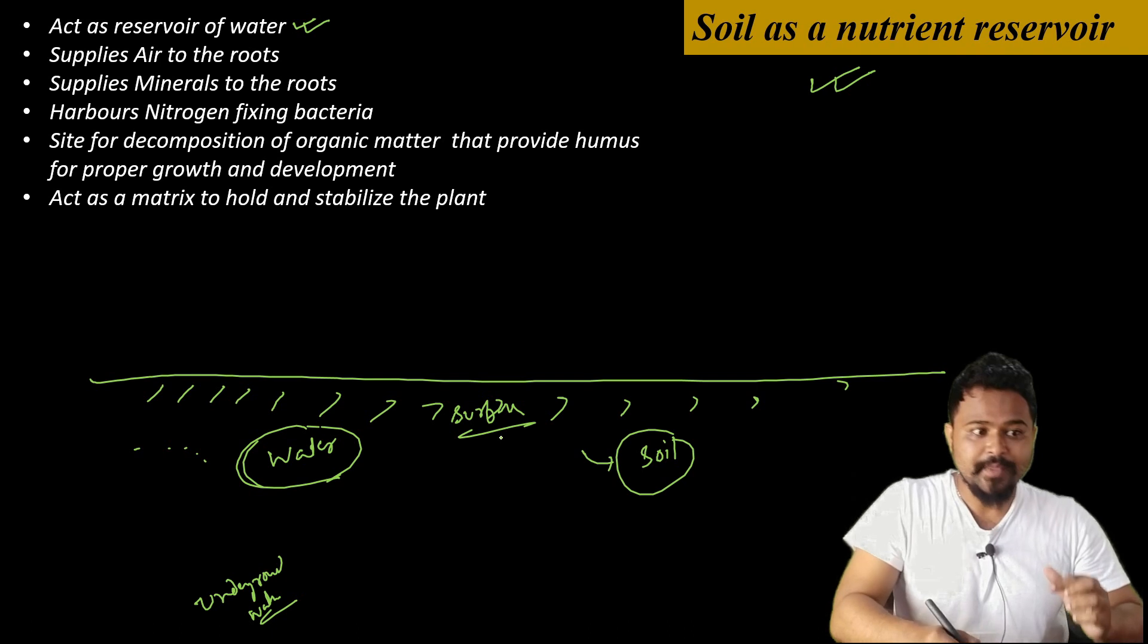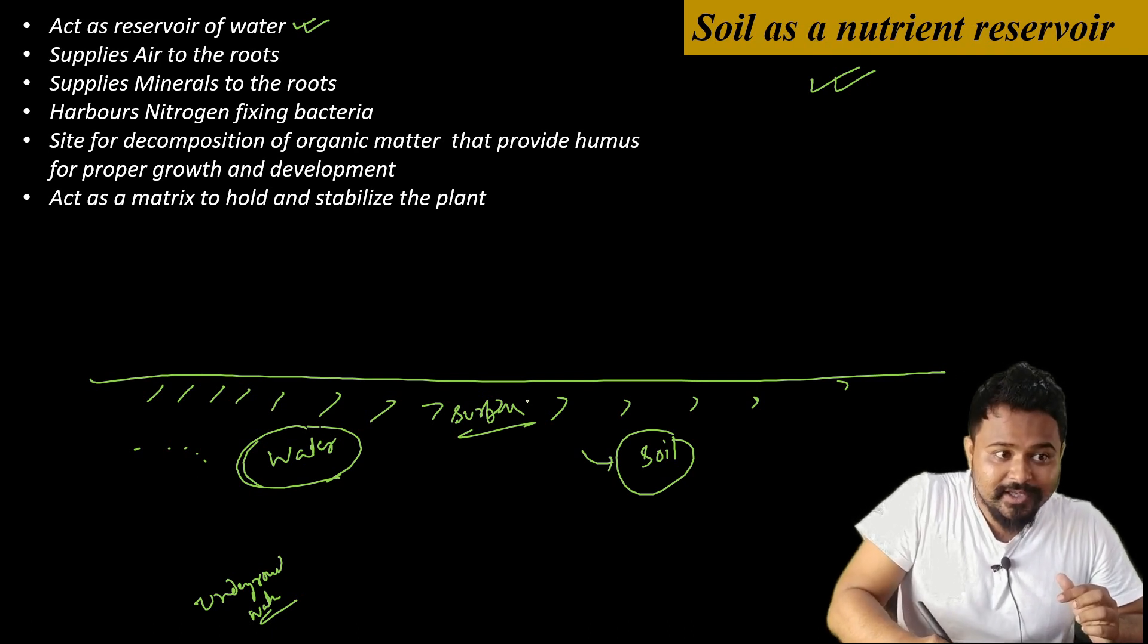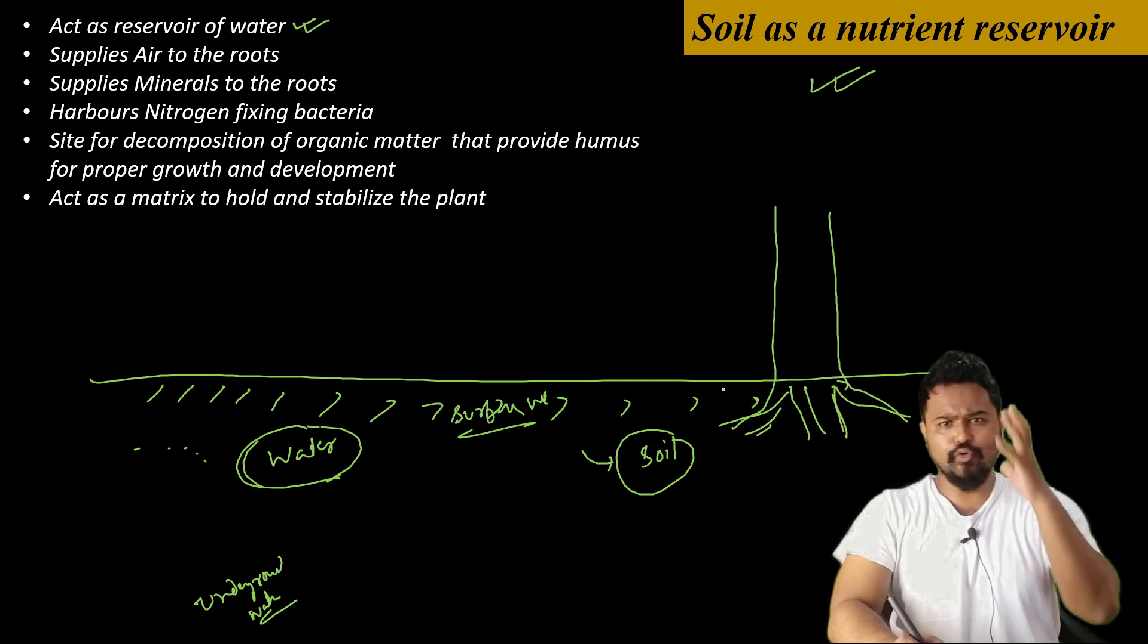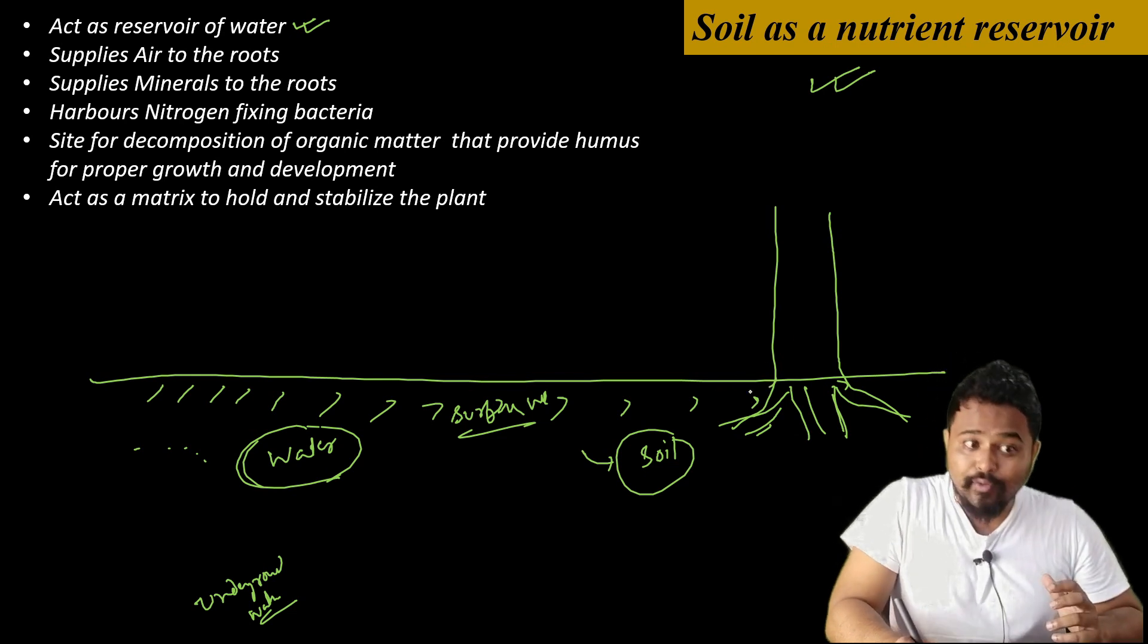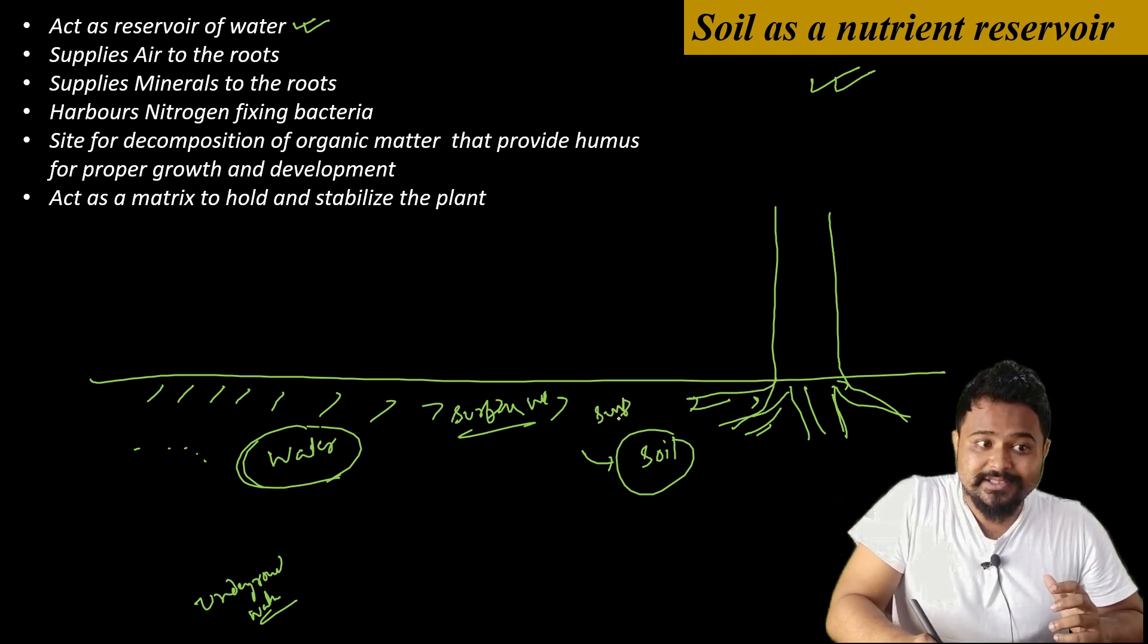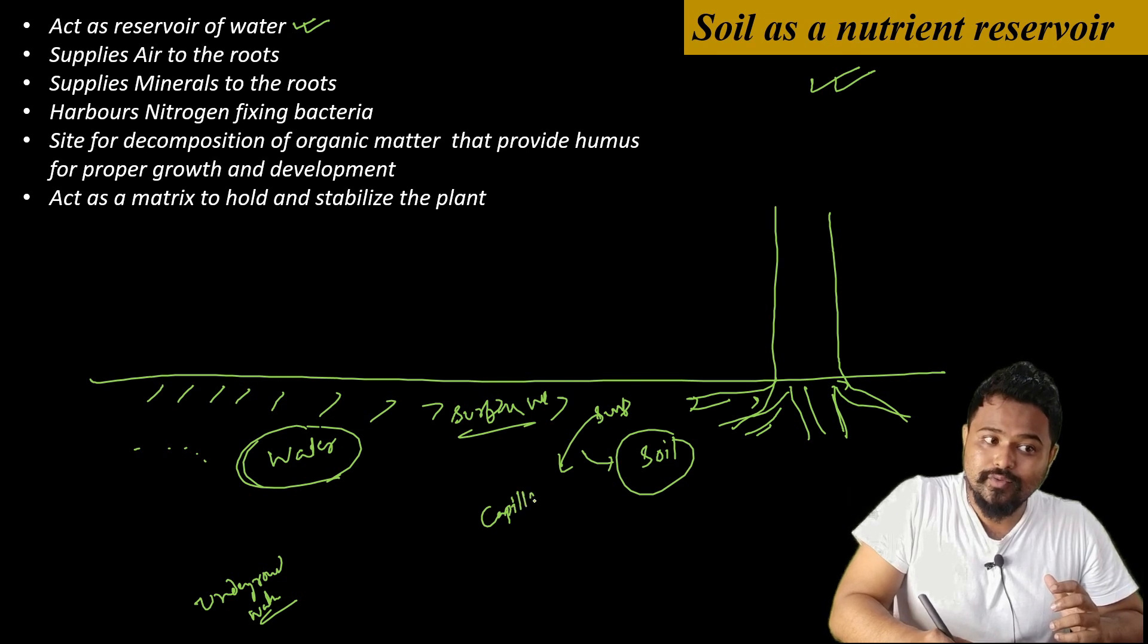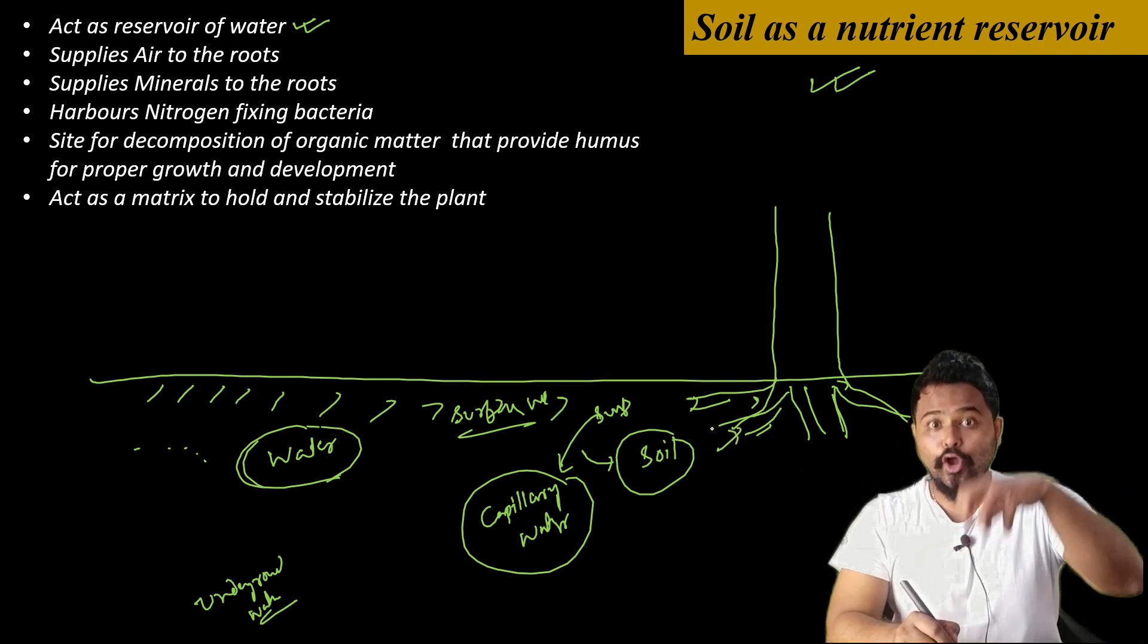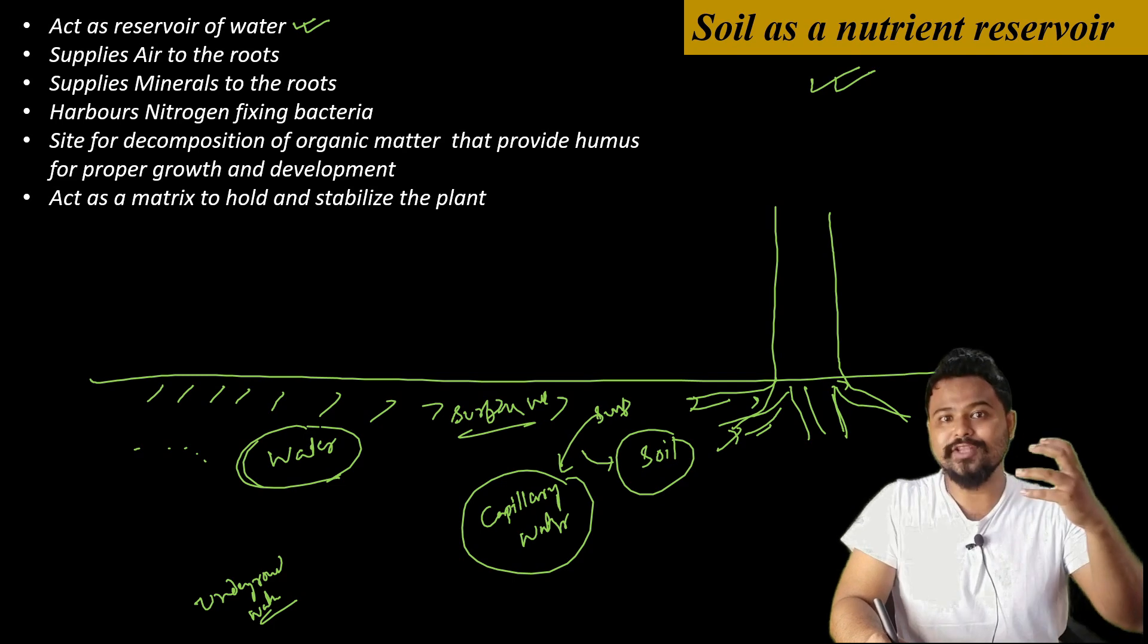But there is also surface water. On the top layer of the soil, we find surface water. This surface water is what plants use. This is capillary water.